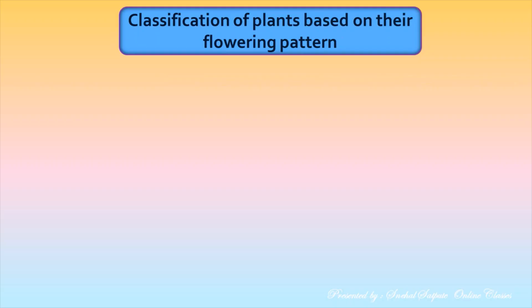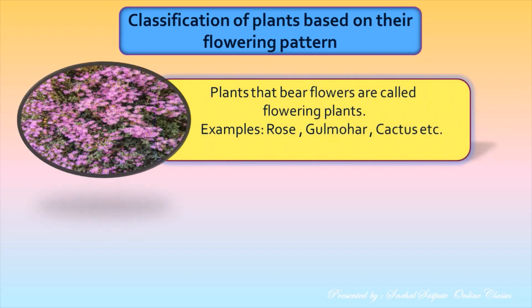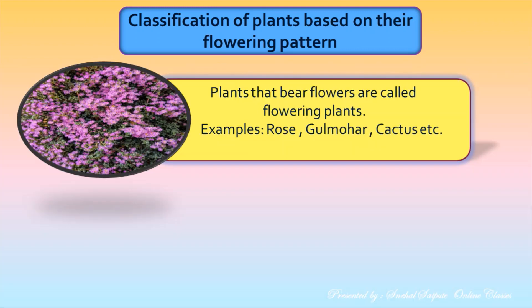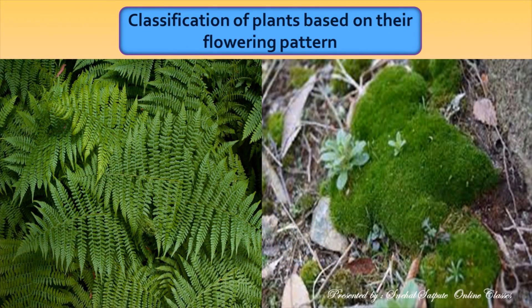Based on flowering pattern, plants are classified as flowering plants and non-flowering plants. Plants that never bear flowers are called non-flowering plants. For example, algae, fern, moss, etc.